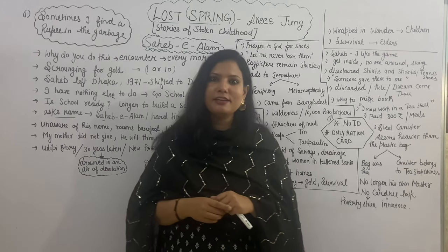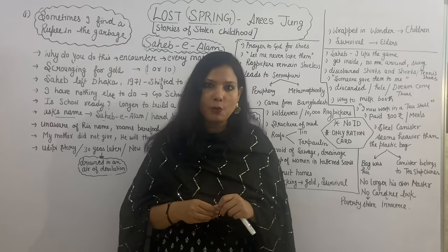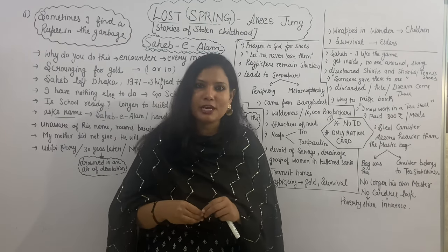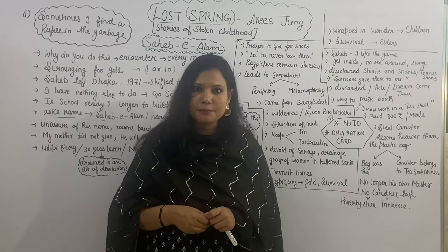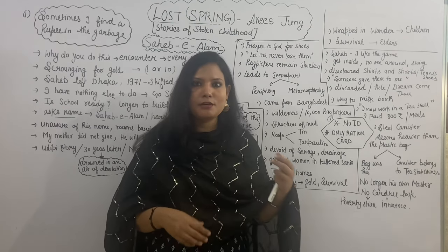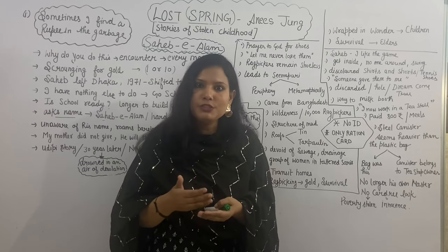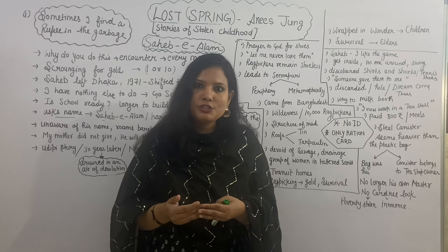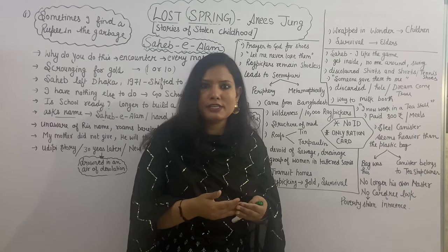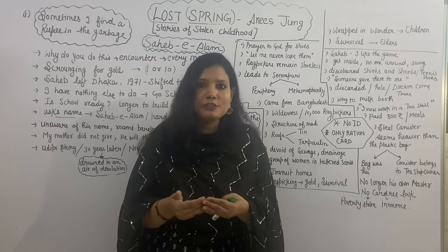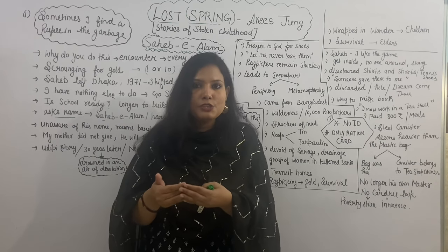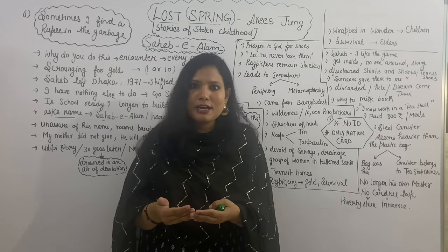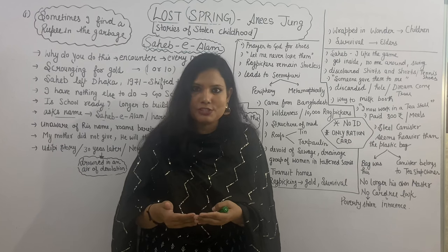Hello everyone, welcome back to my channel Learning with Pace. I am Priyanka Gore and in this video I am going to give you a short, crisp and detailed explanation of the chapter Lost Spring written by Anees Jung. In this story she narrates basically stories of two young boys who belong to impoverished families, and through this story she wants to tell the readers how these boys, those who belong to impoverished families, those children who are not born in affluent and wealthy families, have to churn out their dreams. They are not even allowed to fulfill them and follow their passions.